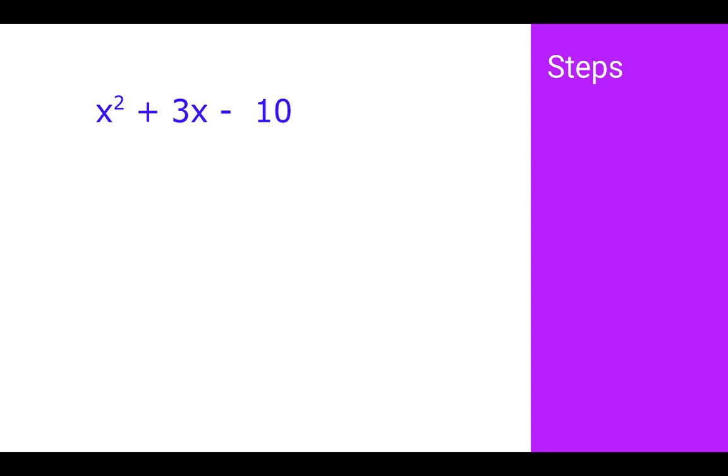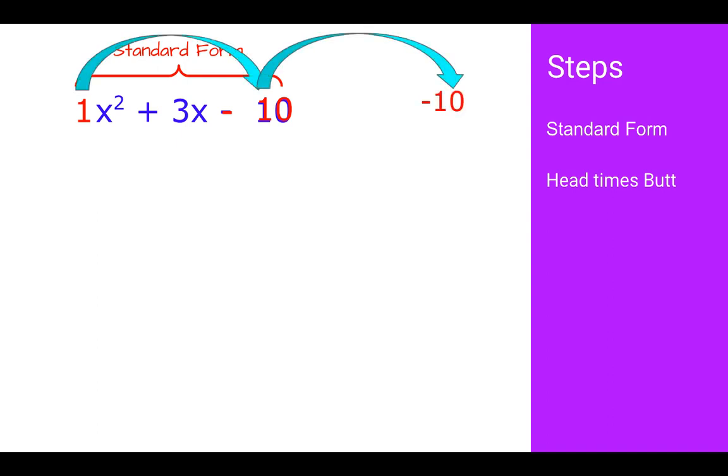Looking at another one, we have x squared plus 3x minus 10. If I double check that this is in standard form, it is x squared plus 3x minus 10. I have something x squared plus something x plus a constant. That's standard form. Head times butt. Well, there's a 1 in front of that x squared. So head times butt, we have 1 times negative 10. Notice the sign comes with it. 1 times negative 10 is negative 10.